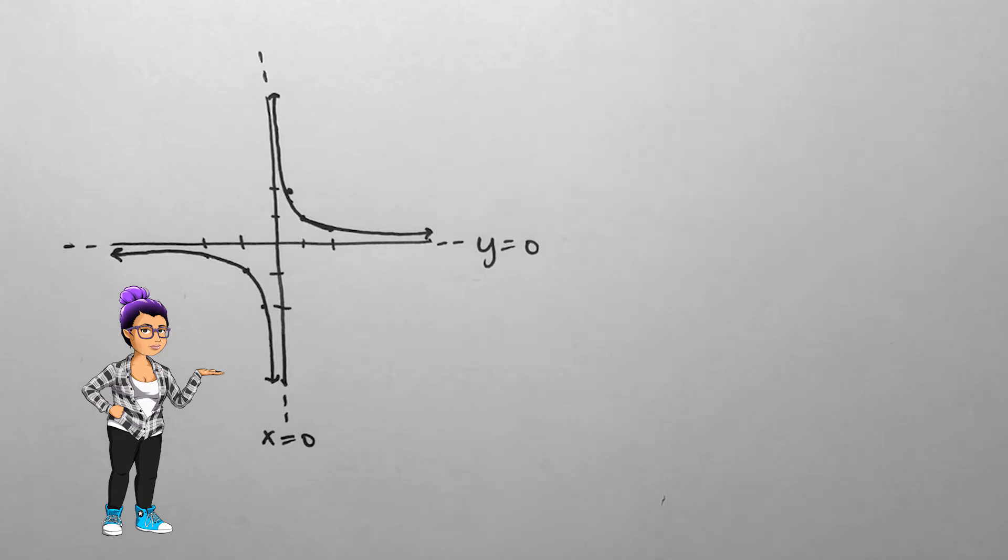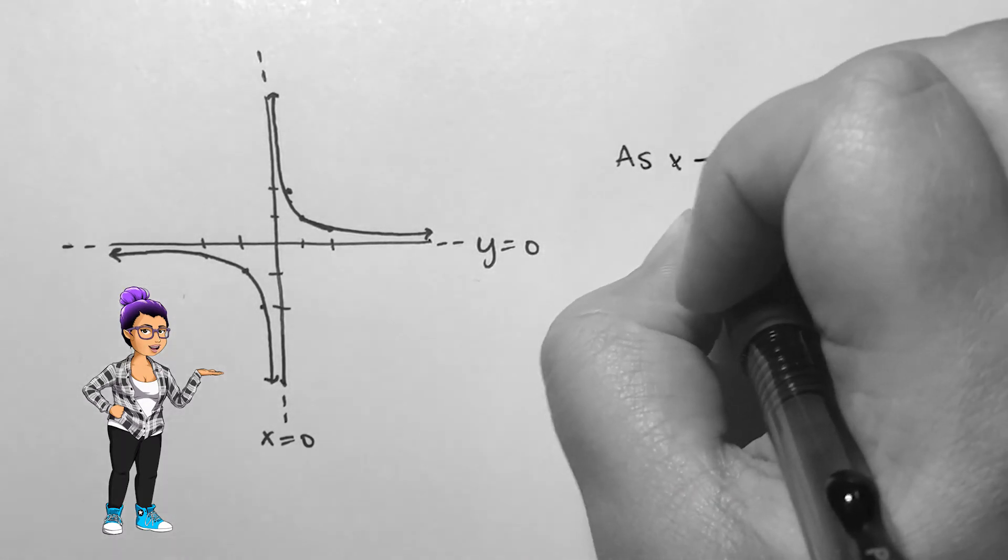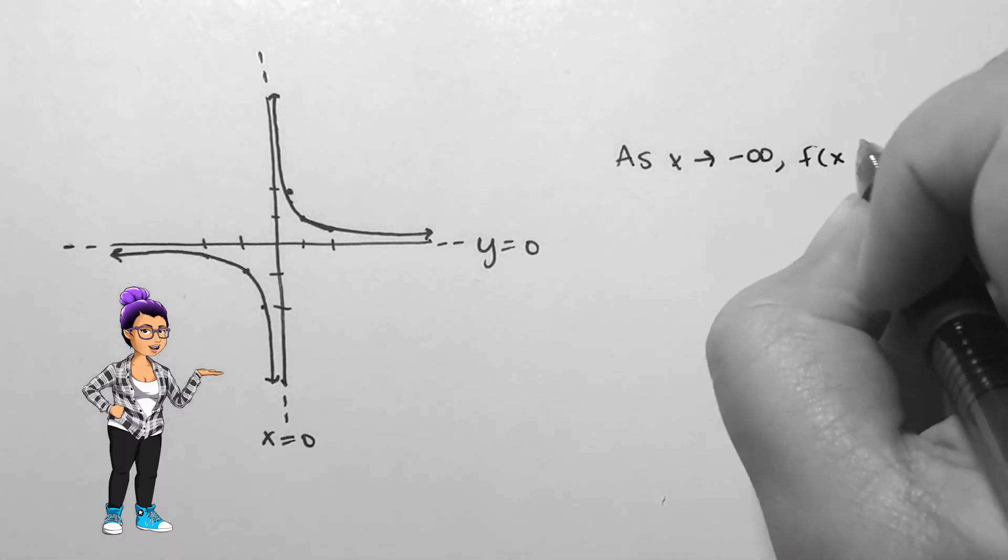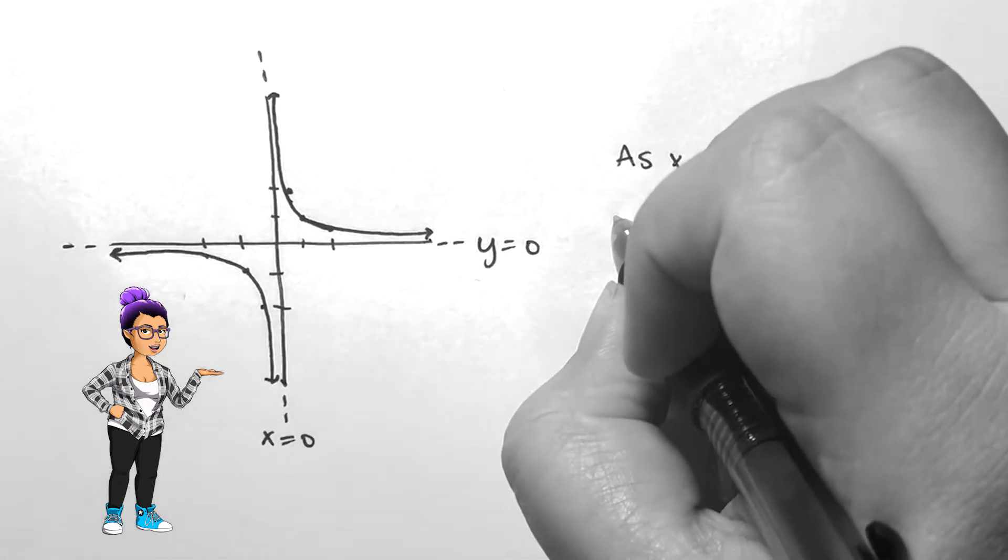Take a look at the reciprocal function. As x approaches negative infinity, the function gets closer and closer to 0, so f approaches 0.